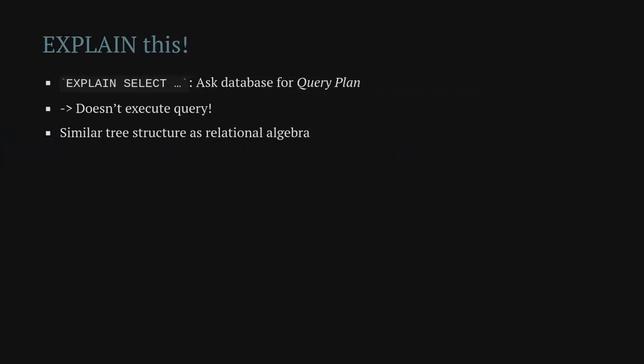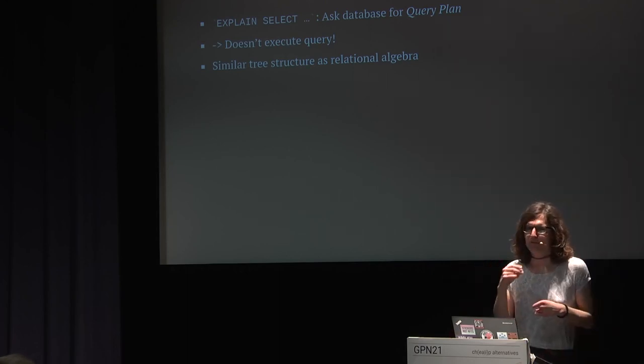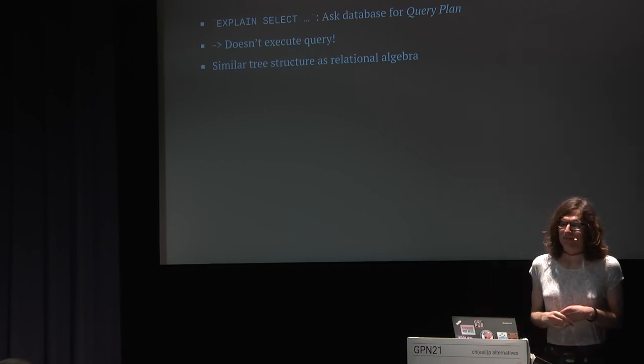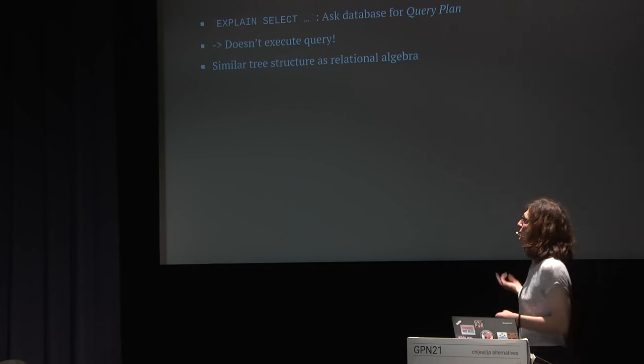Let's open the hood and look inside. The most useful tool for that is EXPLAIN. If you give Postgres EXPLAIN followed by a SELECT query, it asks the database for a query plan without actually executing the query — so it's pretty quick and super useful. These explain trees are also tree structures, similar to what we've seen in relational algebra, though the specific nodes look a bit different. Usually EXPLAIN gives text output, which is hard to read on slides. There's also JSON output, and tools to visualize the results — that's what I'll be using in this talk.